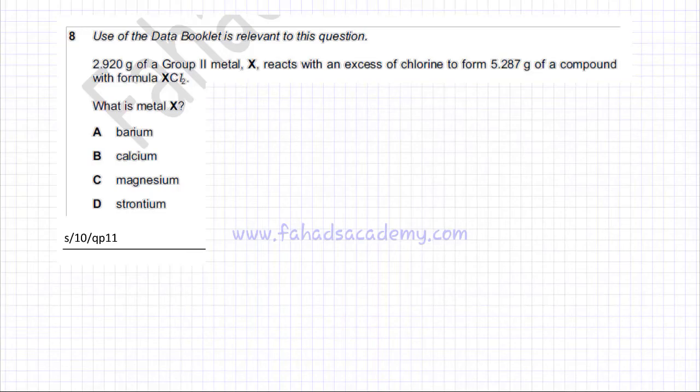We need to construct an equation. There's X, which is the Group 2 metal, and it's reacting with chlorine, which is Cl2. It's stated that the formula of the compound being formed is XCl2. The mass of this compound is 5.287 grams, and the mass of the Group 2 metal is 2.920 grams.